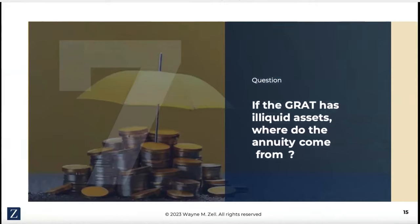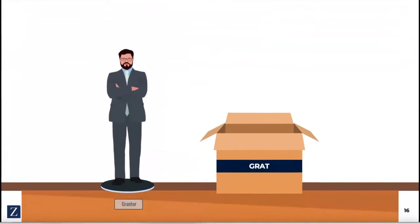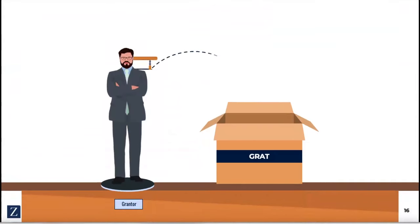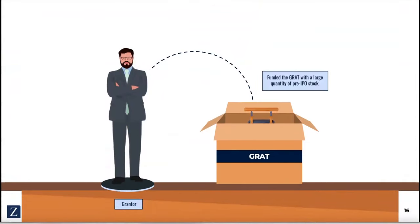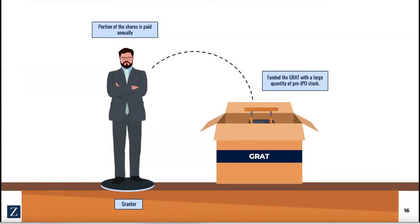If the GRAT has illiquid assets, where do you get the annuity payments from? Well, they can be made with illiquid assets. So let's say you put in some pre-IPO stock into your GRAT, and you don't want to liquidate the stock because you believe it's currently undervalued. So in the absence of cash in the trust, the GRAT can use the shares to pay off the GRAT annuity.